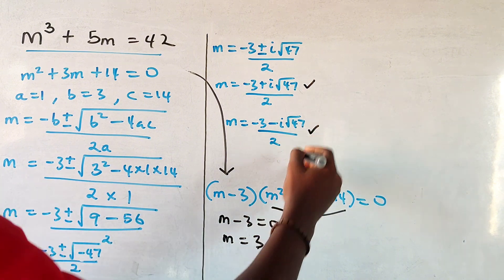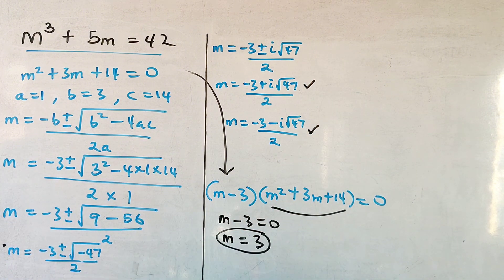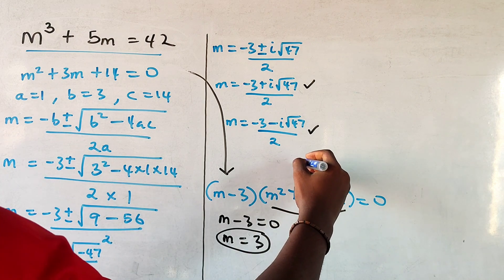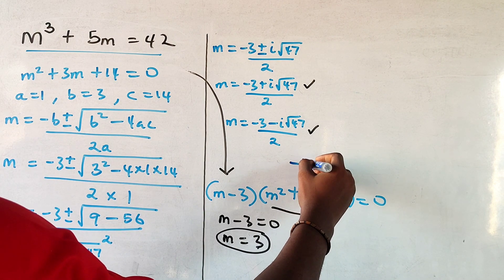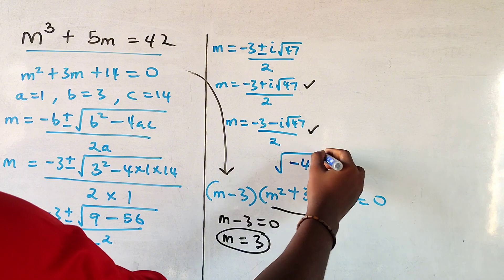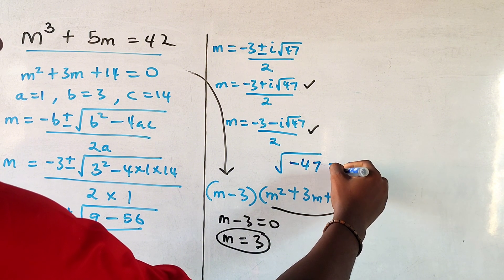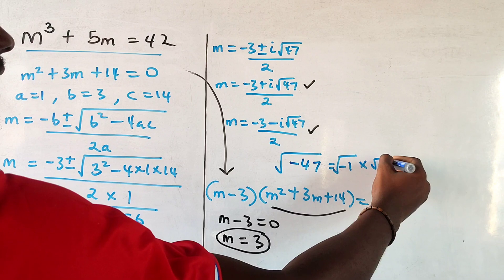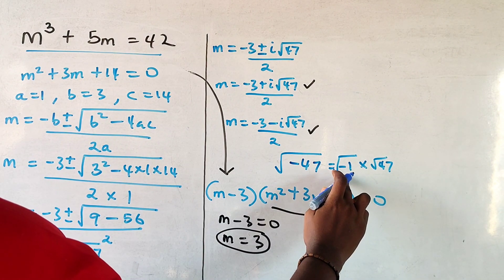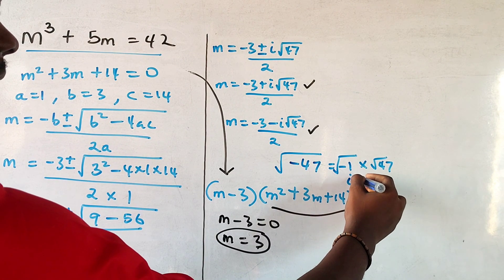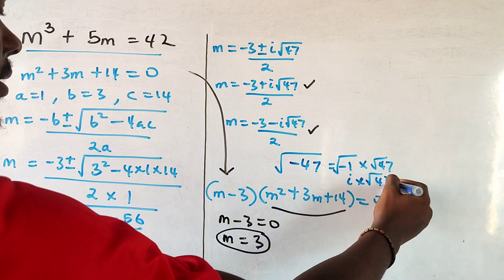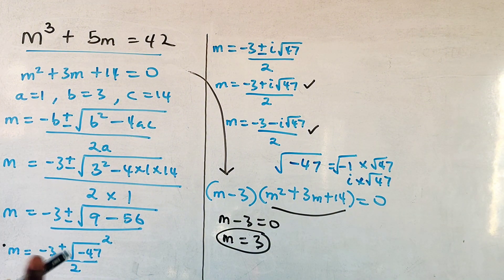For those who don't understand how we got i root 47, this is minus 47 under the root. This is the same thing as square root of minus 1 times root 47. The square root of minus 1 is a complex number i, so that's how we got that number over there.